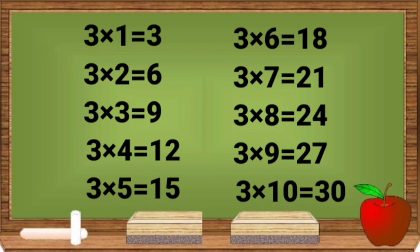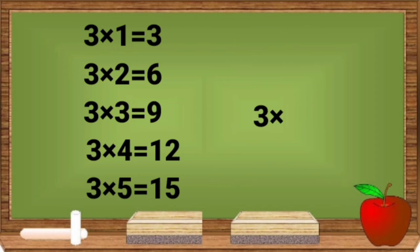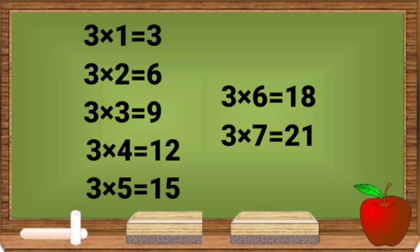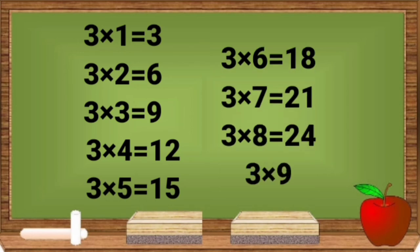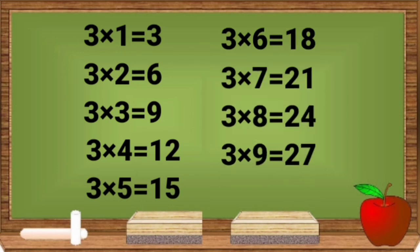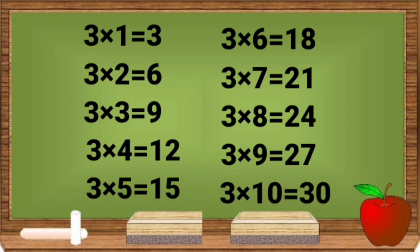3 sixes are 18. 3 sevens are 21. 3 eights are 24. 3 nines are 27. 3 tens are 30.